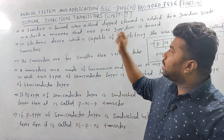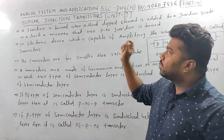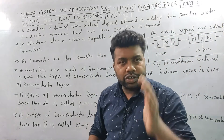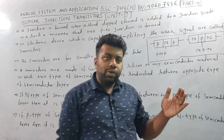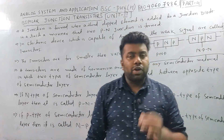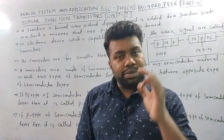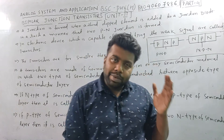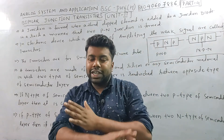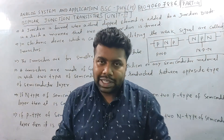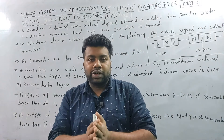The topic of this unit is Bipolar Junction Transistor. In Unit 1, we covered: semiconductor, types of semiconductor, P-type semiconductor, N-type semiconductor, conductor, insulator, and semiconductor details.